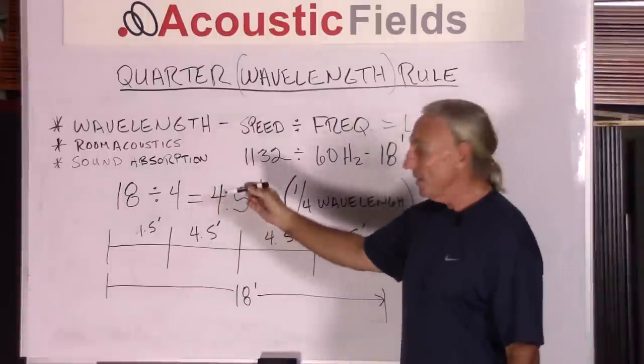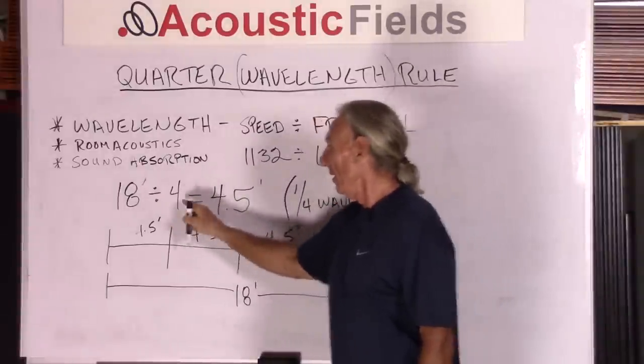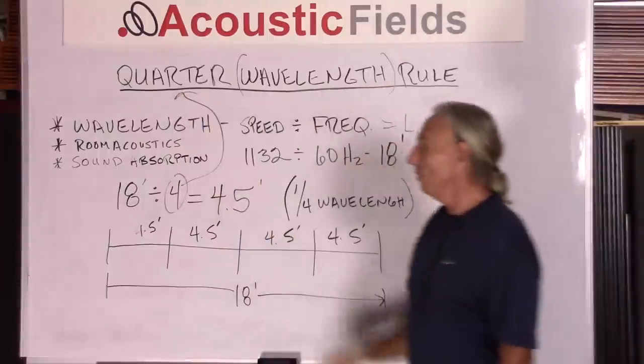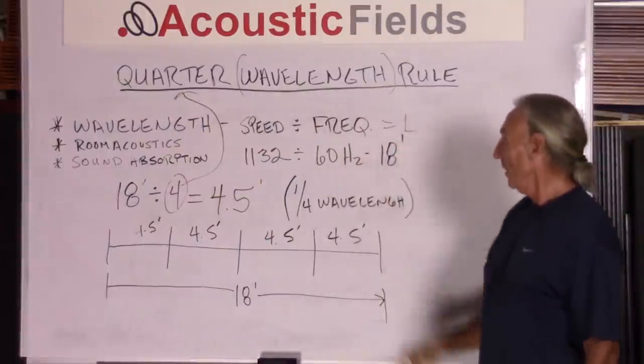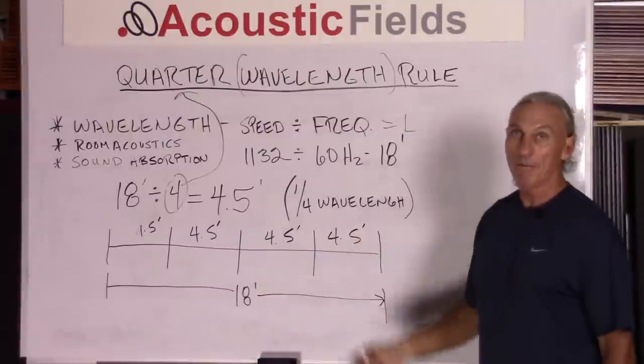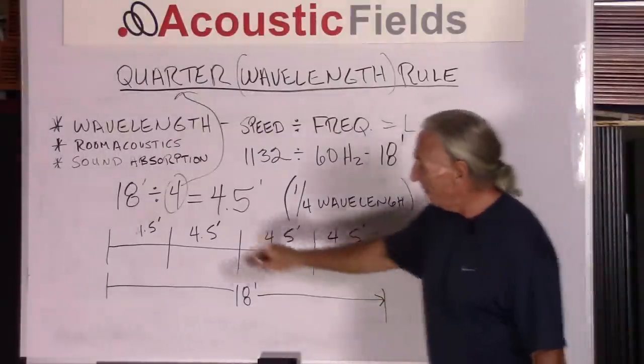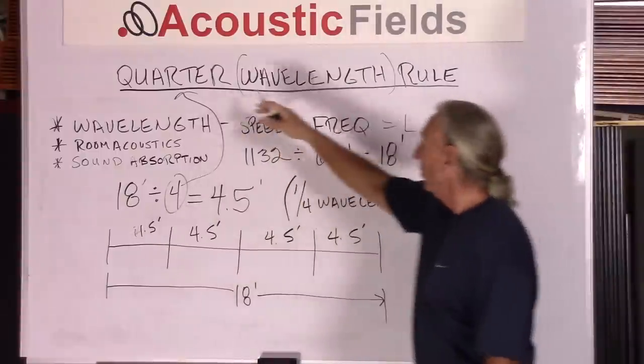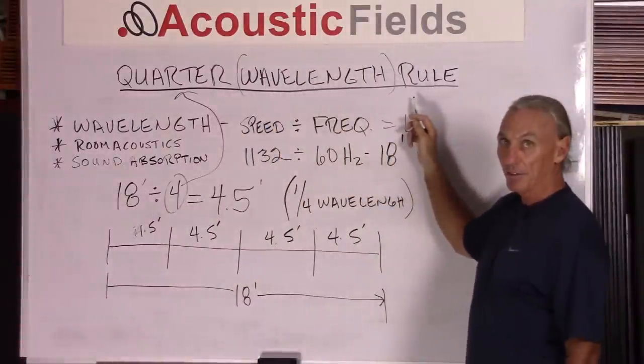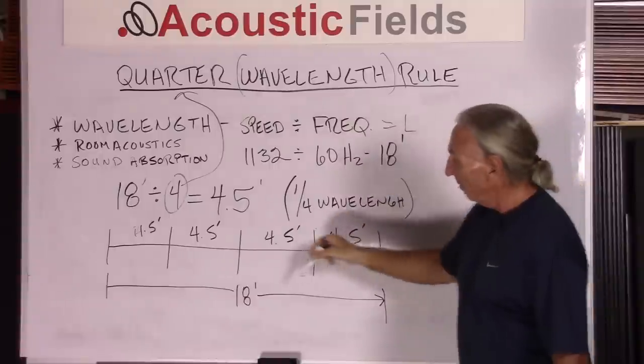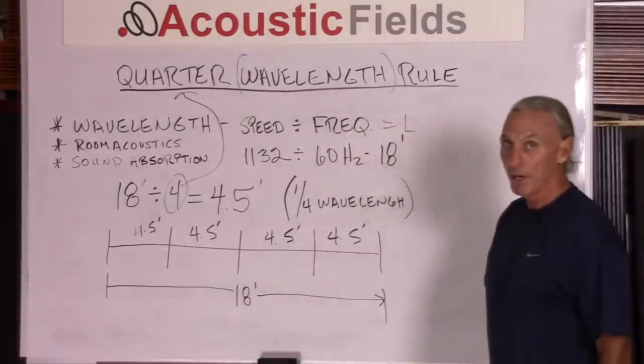So if we take our 18 foot wave, we divide it by 4 because what is 4? One-fourth is quarter, right? We're going to get 4.5 feet. So if we take our 18 foot wave and we cut it up into quarter wavelength sections to illustrate quarter wavelength rule, then we have each section at 4.5 feet.